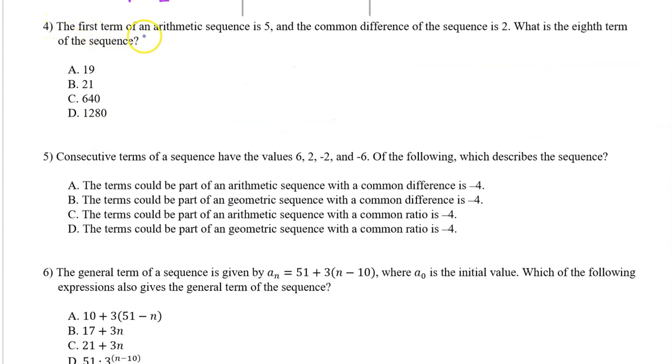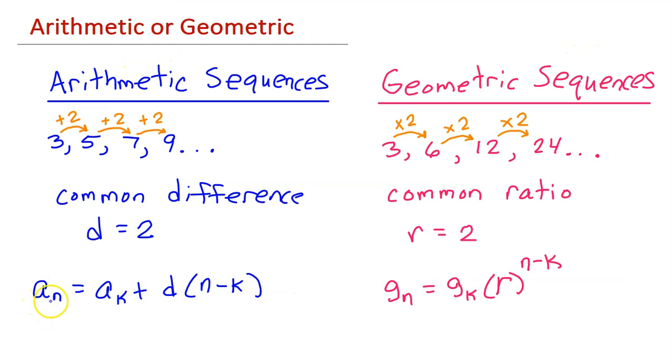Number 4. The first term of an arithmetic sequence is 5, and the common difference of the sequence is 2. What is the eighth term of the sequence? The nth term of an arithmetic sequence is modeled by a_n equals a_k plus d times n minus k, where d is the common difference. Of course, a_n is the nth term, and a_k is term k.